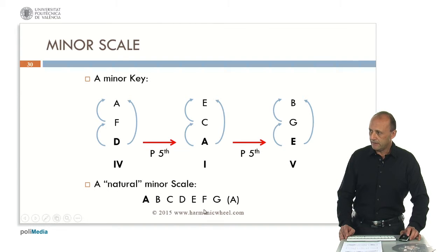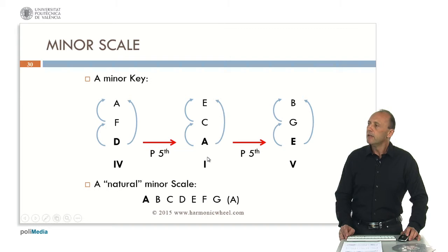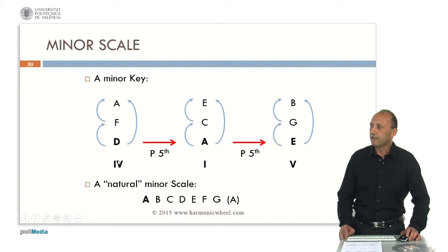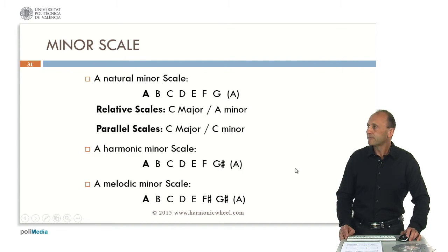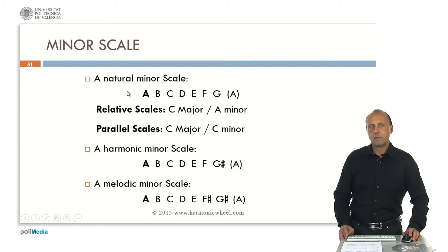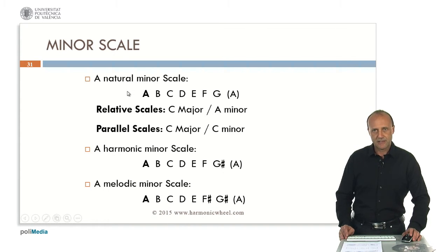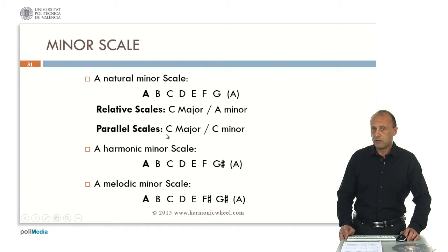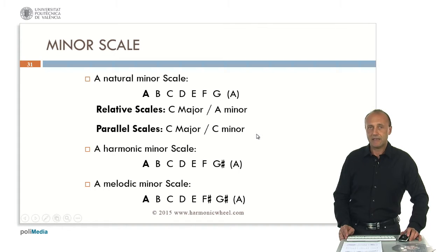Looking at these notes, we can verify that the three minor chords forming the A minor key are placed on the first degree, note A, or tonic; the fourth degree, note D, subdominant; and the fifth degree, note E, which is the dominant. The notes in the A natural minor scale are exactly the same as in the C major scale. These scales having exactly the same notes but different tonic are called relative scales. Those scales having the same tonic but different notes are called parallel scales — this is the case of C major and C minor, for example.